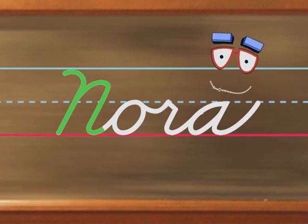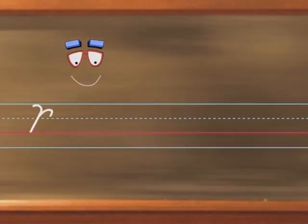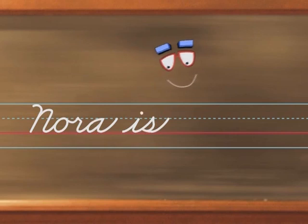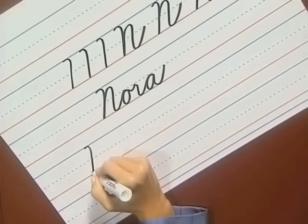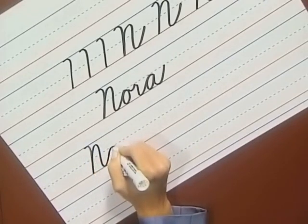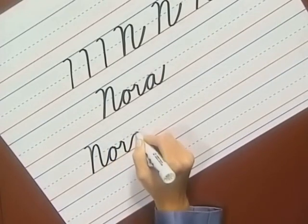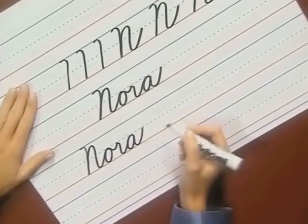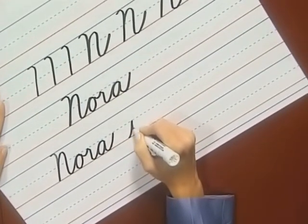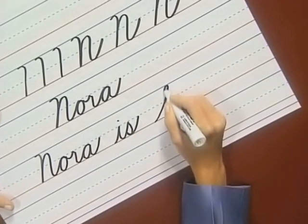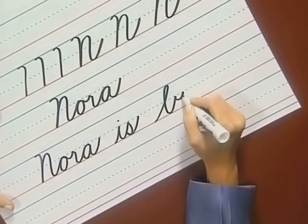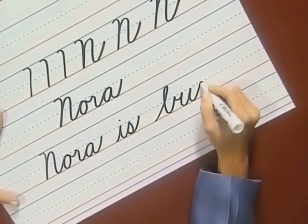So what can we write about Nora? Nora is my niece on my sister's side, and she's always busy with something. Let's write: Nora is busy. Write with me. Curve forward, pull, over curve, pull, and curve into the O, R, and A. Lift and space, then comes the I and S, dot the I, lift and space. The B ends with a check stroke, and over to the U, into the S, and Y.